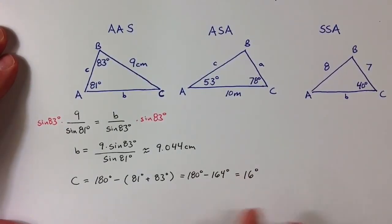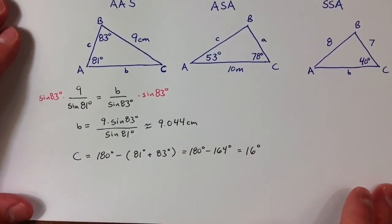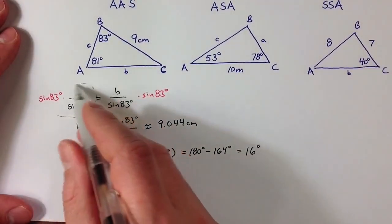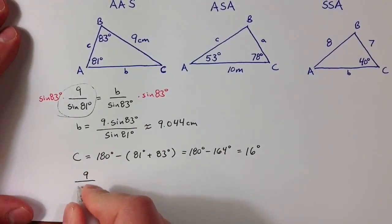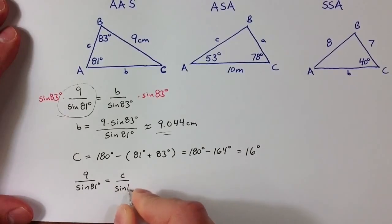And so then in a similar way, I can set up a ratio, and it makes sense to use the same original given information here. It helps to avoid rounding error. If I take that same given information rather than the approximate value that we found, I can take 9 divided by sine of 81 degrees and set that equal to c divided by sine of 16 degrees, which 16 degrees is also an exact value because it doesn't involve any rounding.